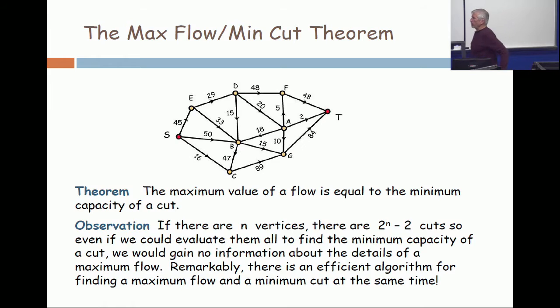So, conceivably, you could test all the cuts and simply calculate the capacity of each and take the minimum. But there are 2 to the n minus 2 cuts. It's what's in L and what's in R. If you put all the vertices in L, whatever vertices you put in L, the remaining ones are in R. So, how many different ways are there to choose the subset L?